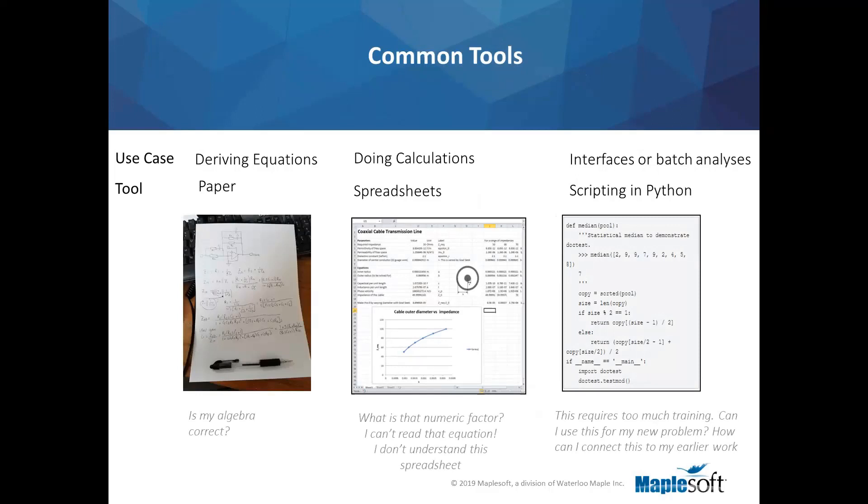Engineers pick a tool to solve a problem. If they're deriving equations or doing first principles modeling they might use paper and a pen. Sometimes an engineer might use a programming language for batch analyses or creating an interactive interface that sits on top of their analyses. If they're involved in number crunching they might use a spreadsheet and engineers do this far more often than deriving equations or programming by at least an order of magnitude. So here we have three different use cases and three different tools. That in of itself is a problem but we'll come to that later.